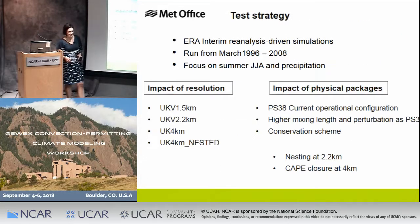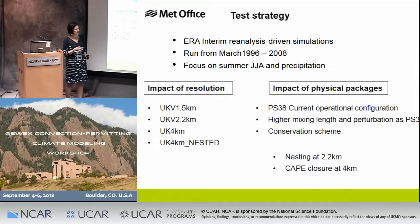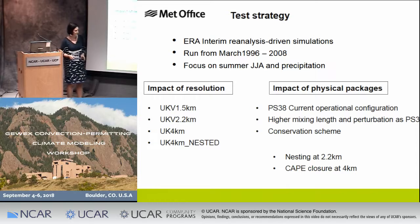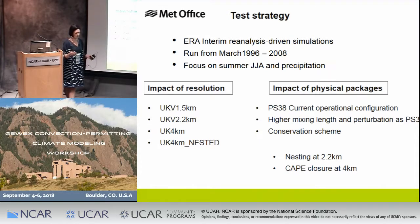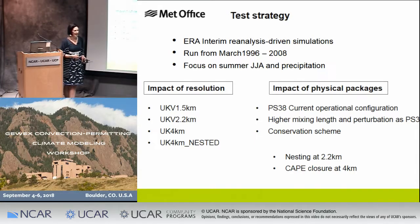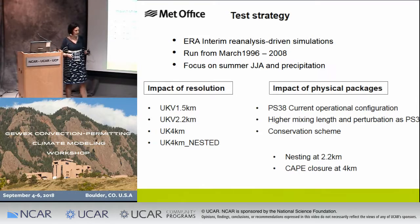To answer this question we did a series of tests, all run with ERA-Interim analysis, all between 1996 and 2008, focusing on summer and precipitation. We divided the tests in two parts. First, resolution impact: we selected 1.5 and 2.2 km — what is used for deterministic and ensemble forecast in NWP mode — and 4 km because it's cheap. In addition, we considered the 4 km nested in a 12 km domain over Europe. All these tests were run with PS35.